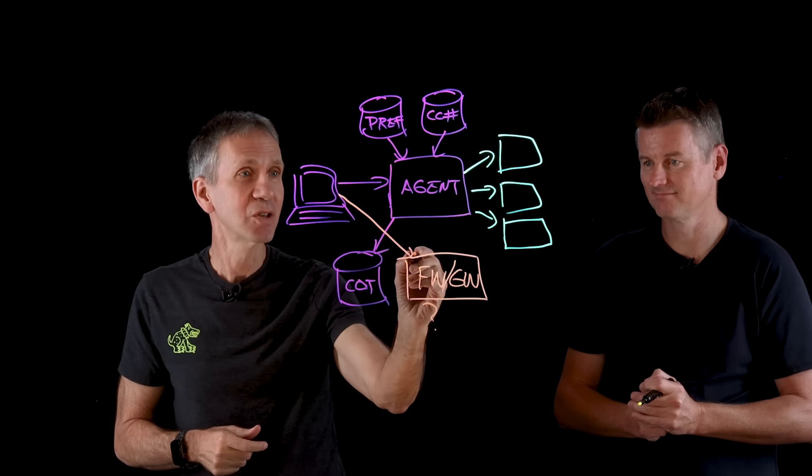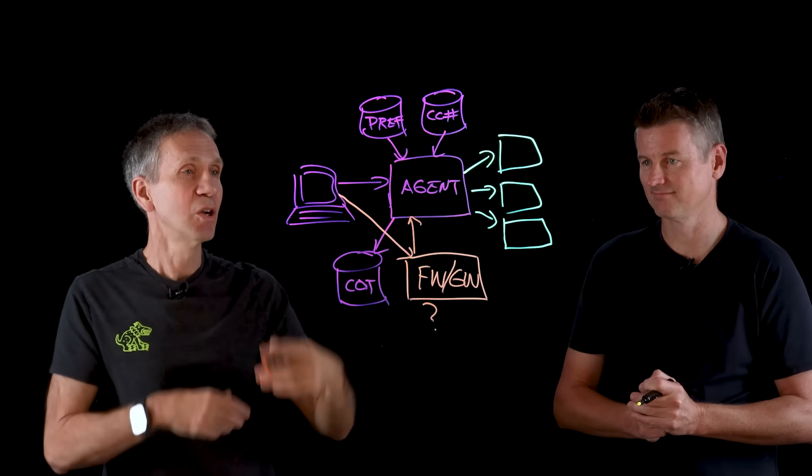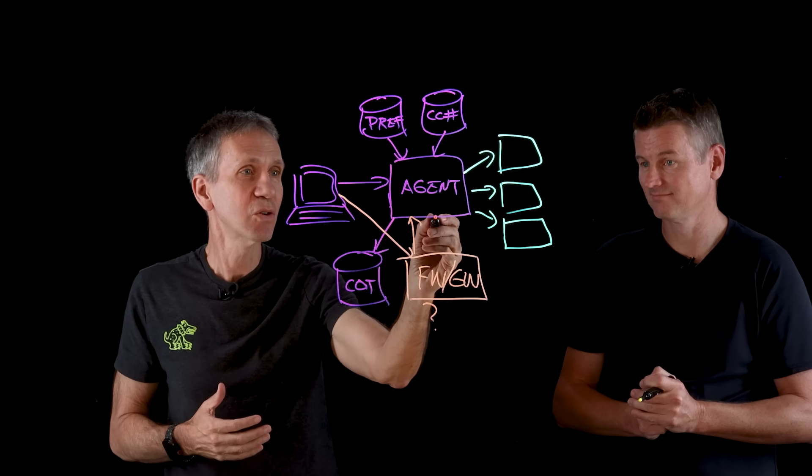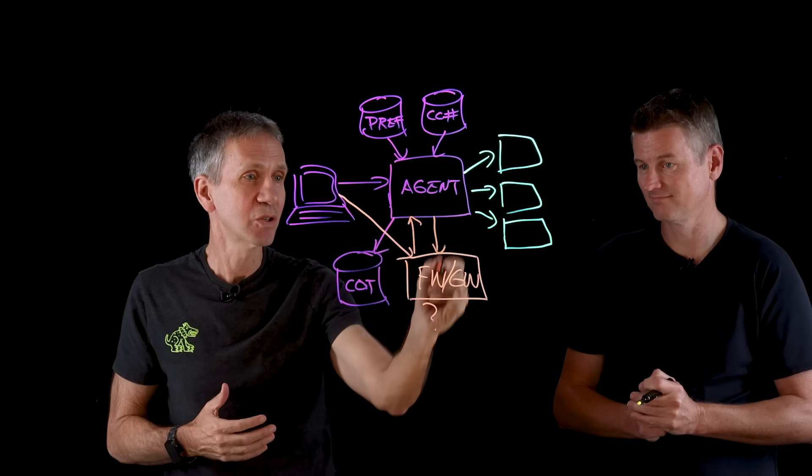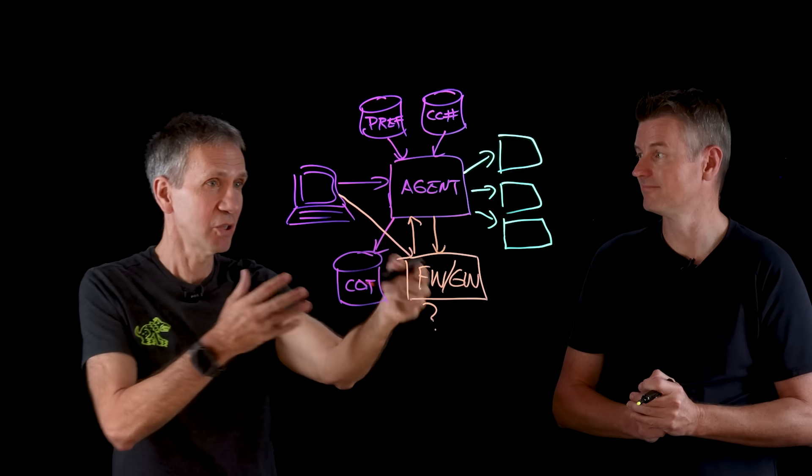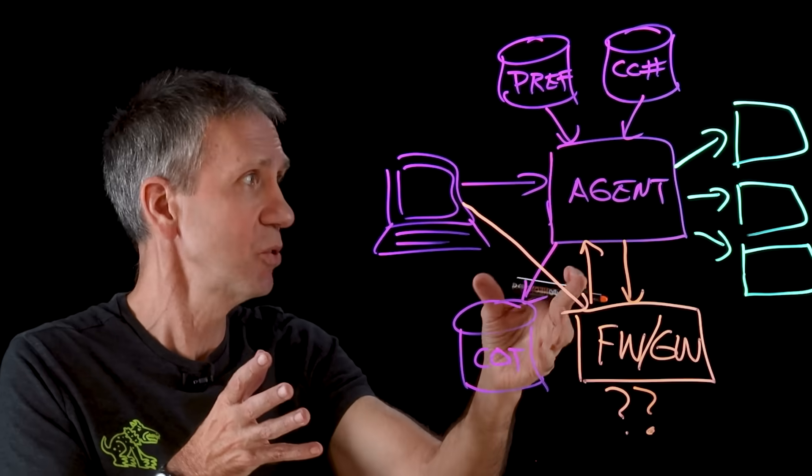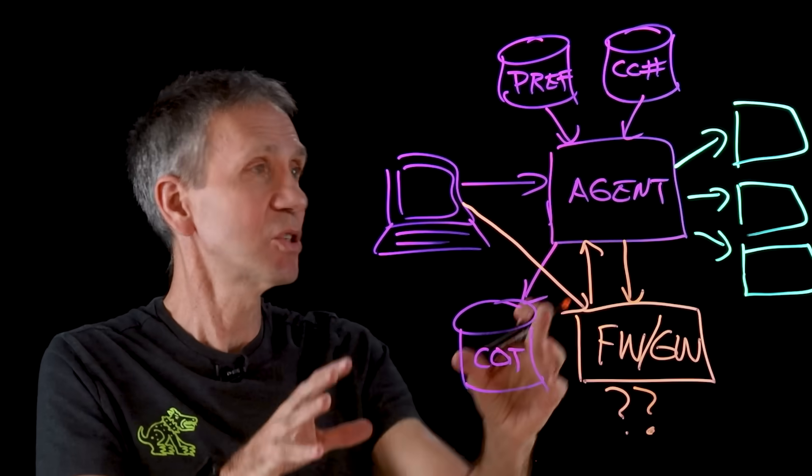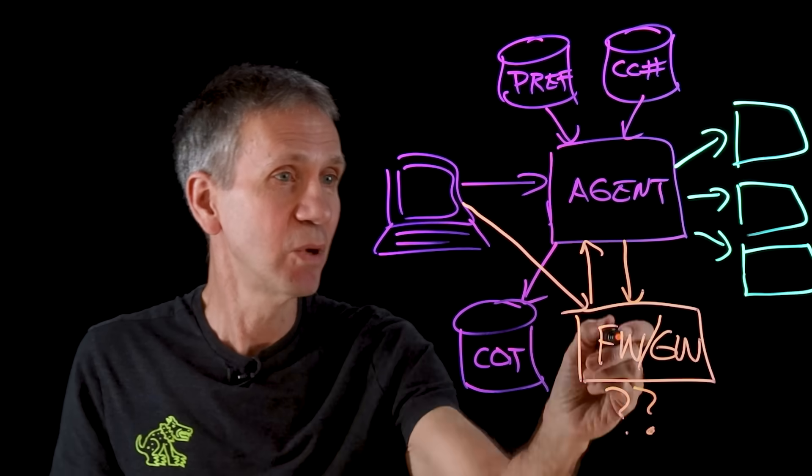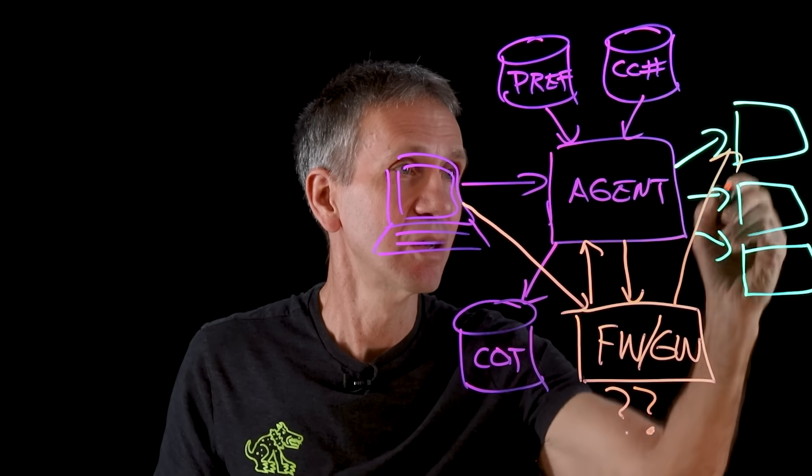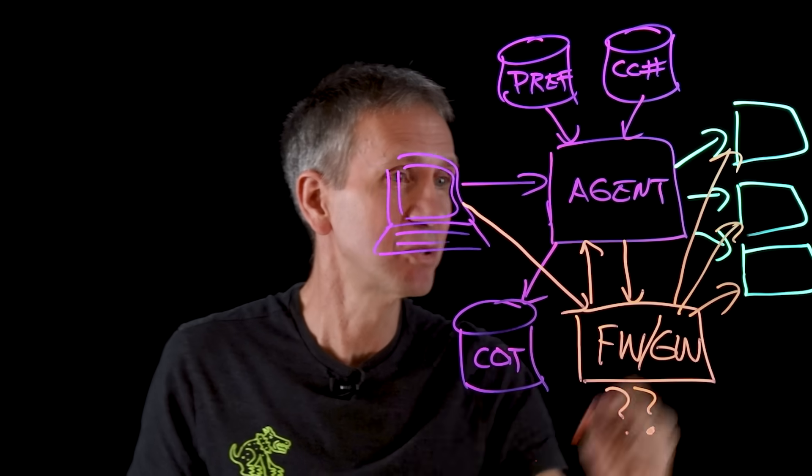Then if it passes, it's going to go up into the agent where it's going to do its reasoning. It's going to pull in all of this information. It's going to formulate its request. It's going to go back out through this firewall where once again it gets examined because sometimes agents hallucinate. An agent can be poisoned. It might do something that's inappropriate. We get a chance once again to examine and then it goes out and talks to all of these websites.